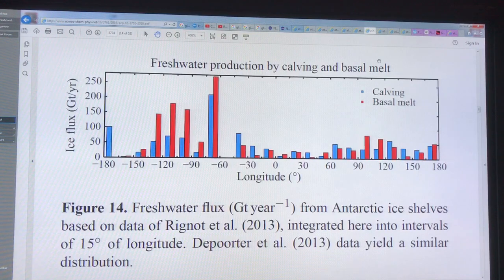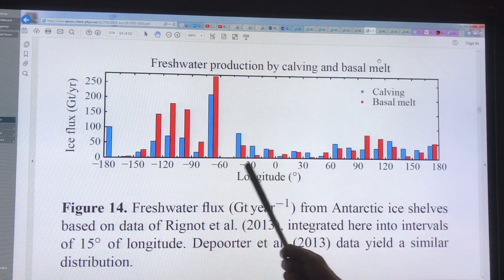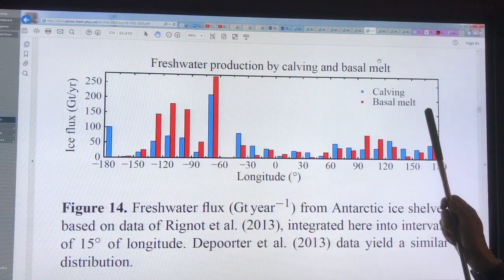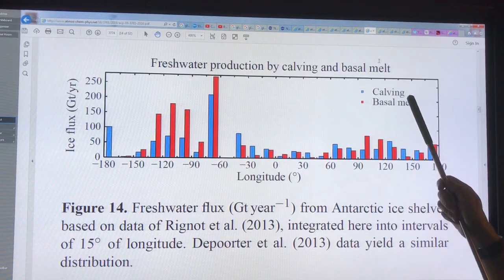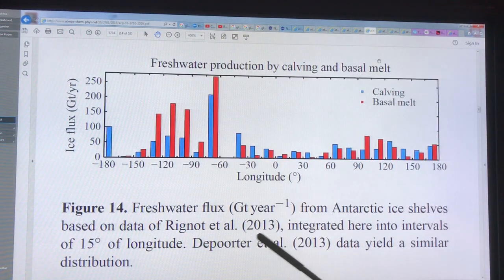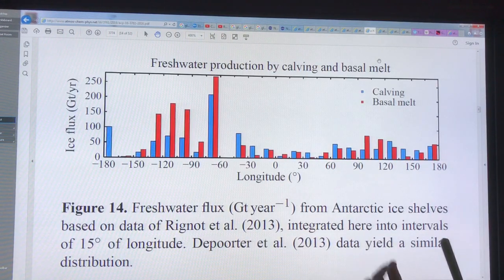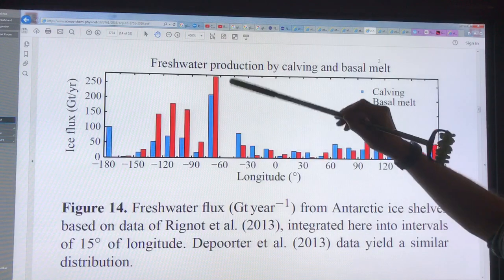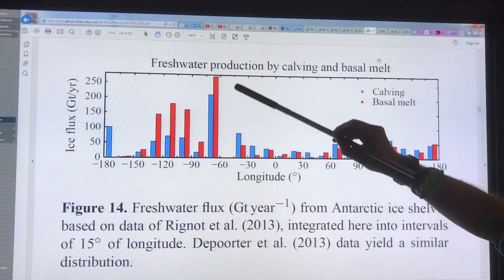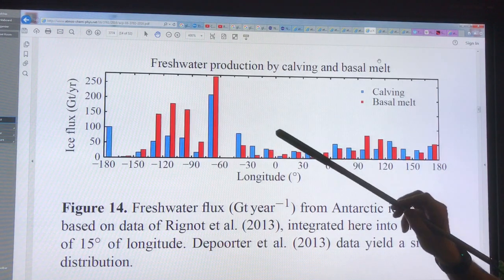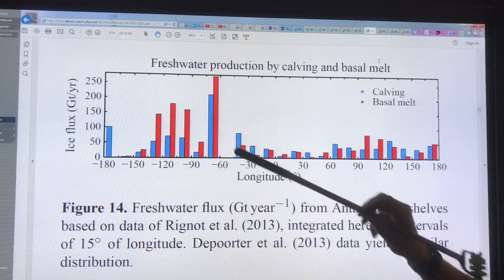This is showing you, as a function of latitude around the coastline of Antarctica, how much calving there is and how much basal melt based on data from 2013. These are 15 degree bins. You can see it's highest in some regions here—I'm assuming these will be on the West Antarctic Ice Shelf, probably the Antarctic Peninsula.